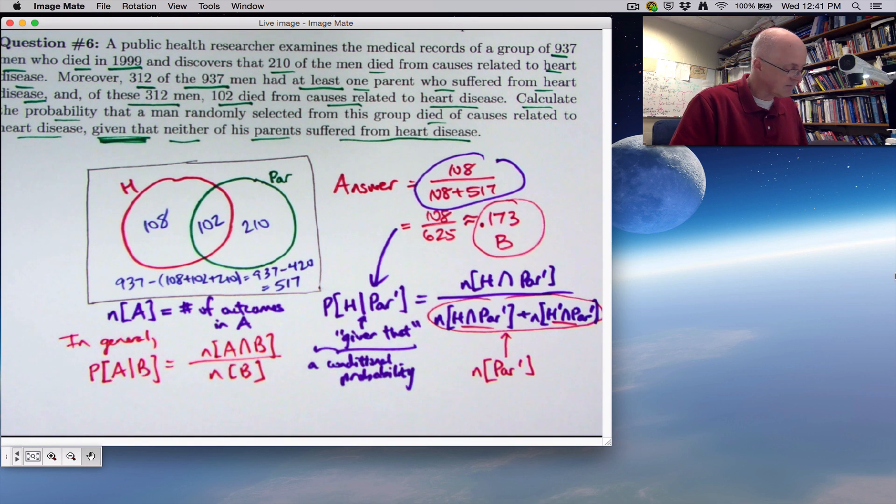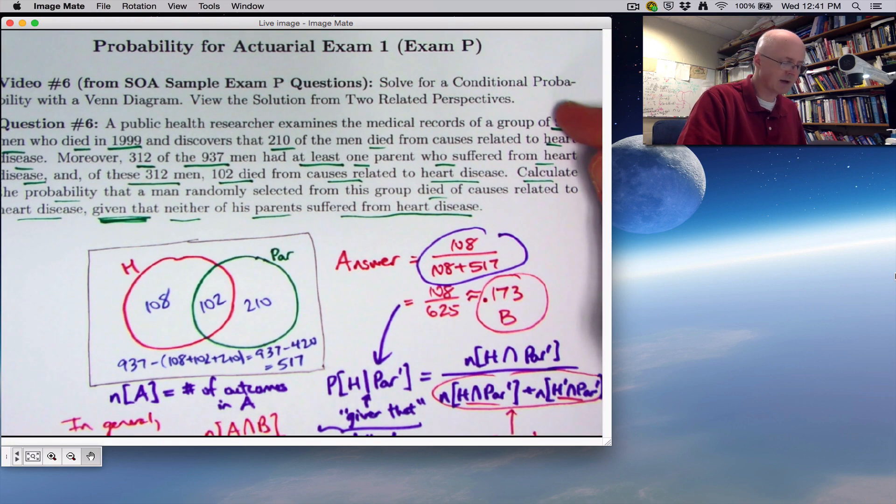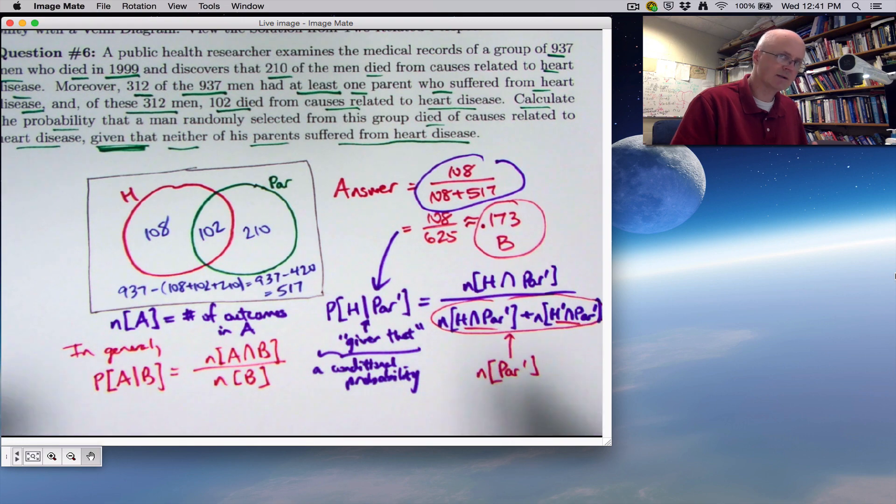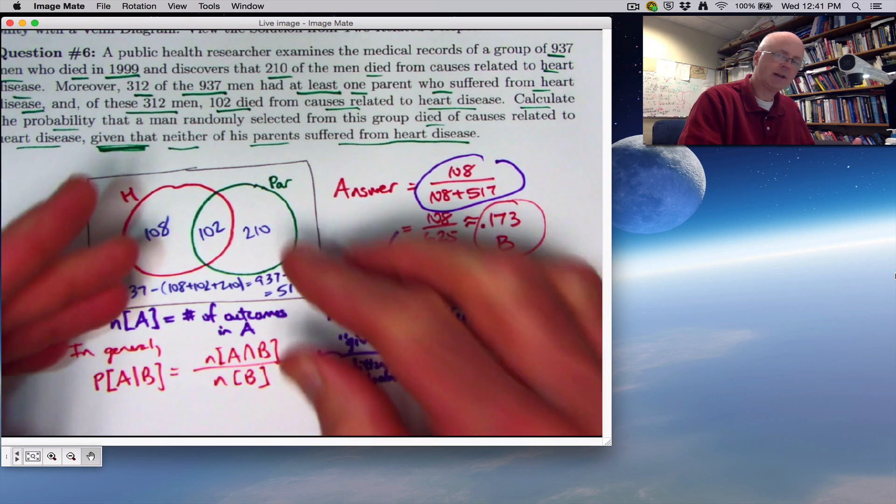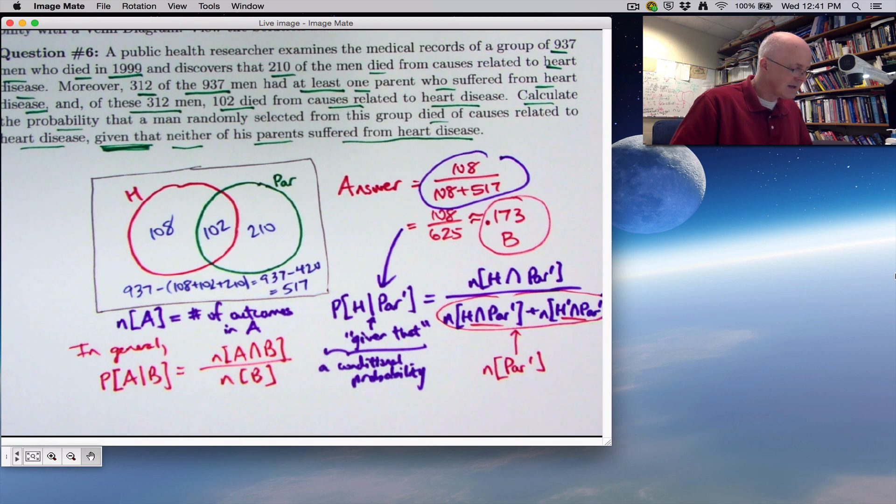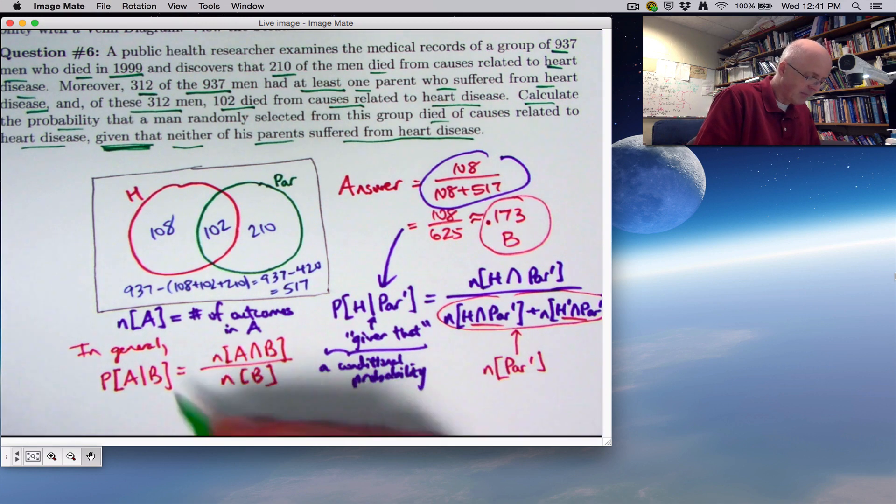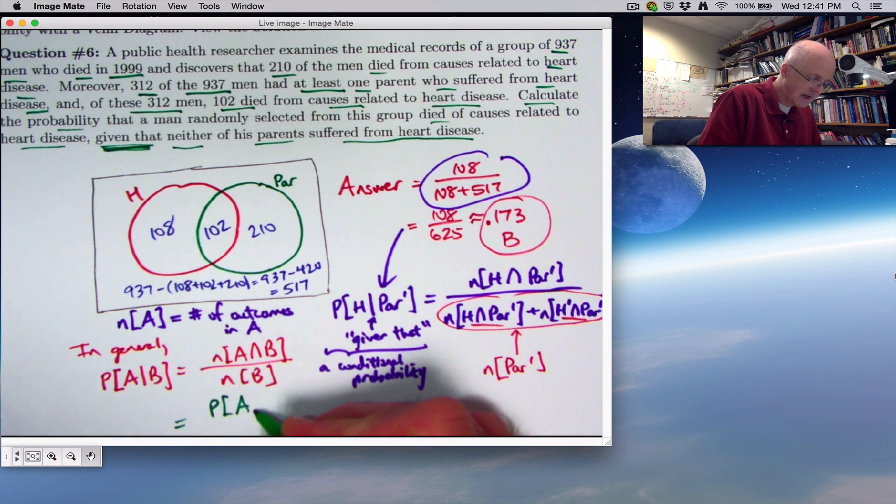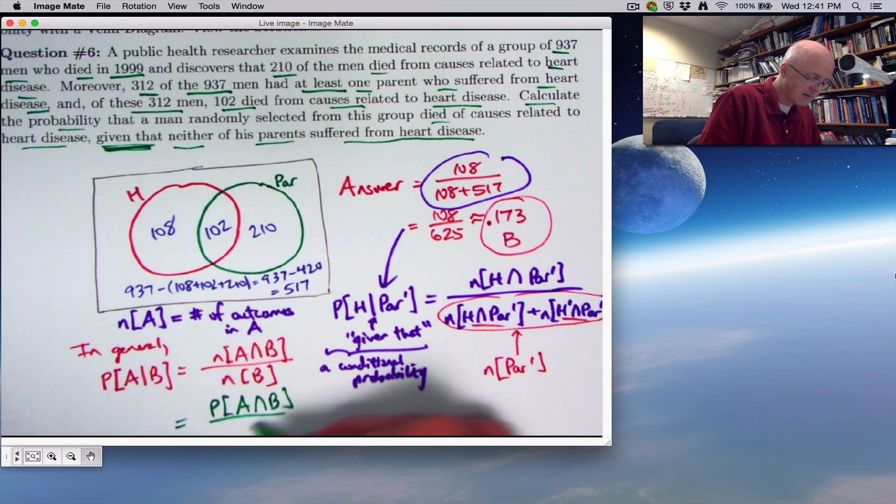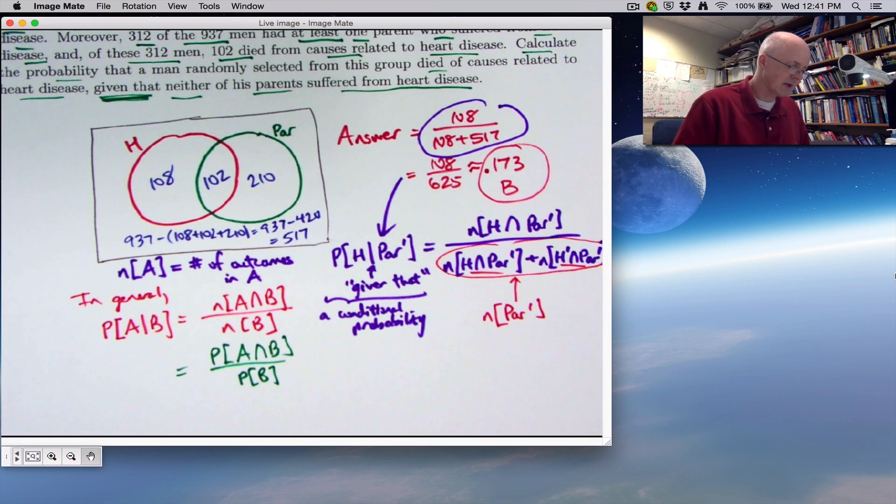But there's another way to write this, a second perspective. Remember, we're going to look at this from two related perspectives. There's a second way to look at this that works as long as you're not dividing by zero, even if you can't enumerate how many people or outcomes are in different events, even if they're infinite numbers in a sense. You can also say this equals the probability of A intersect B divided by the probability of B, as long as the probability of B is non-zero.